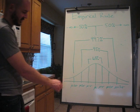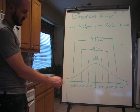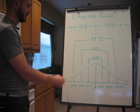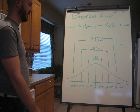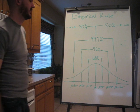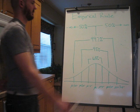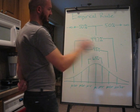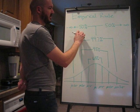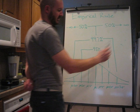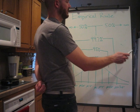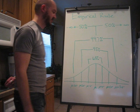Now it doesn't go out again with another standard deviation because it gets so small. It goes out to negative infinity and positive infinity. But from mu to negative infinity is 50% of your curve, and from mu to positive infinity is the other 50% of your curve.